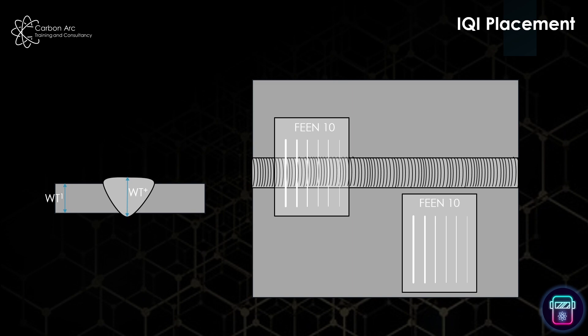You know, you should always, I believe, always try to put them on the source side first. But if you want to put them on the film side, you need to denote that with a lead letter to show that the IQI is not where you think it should be.